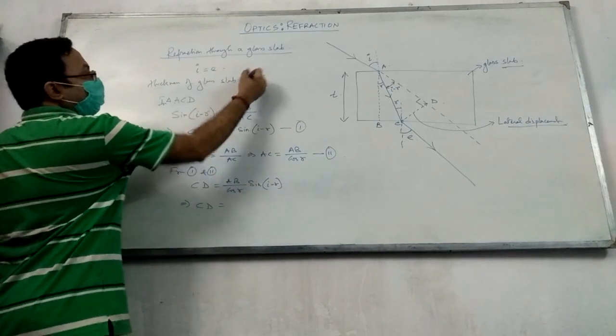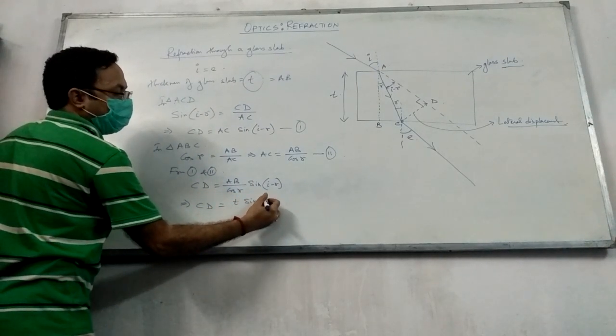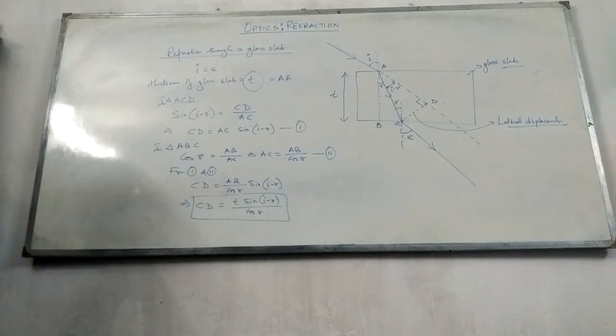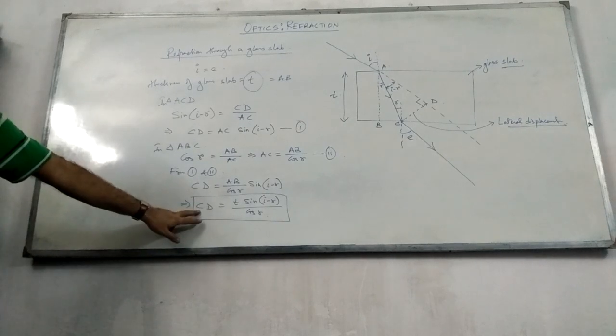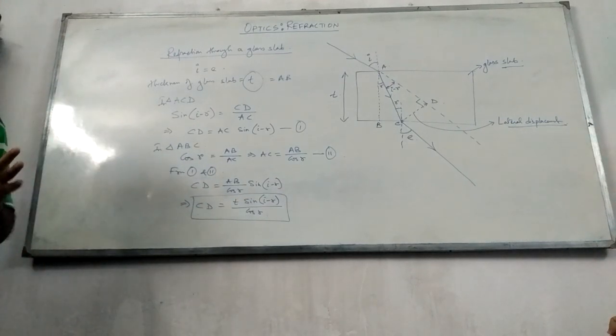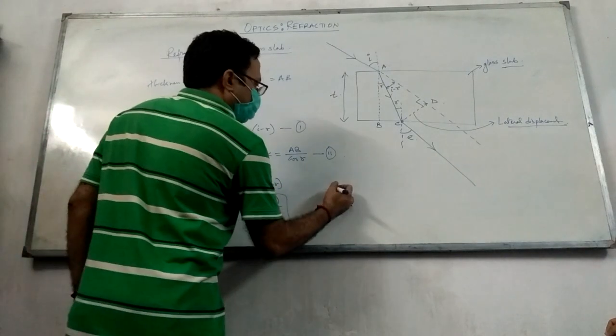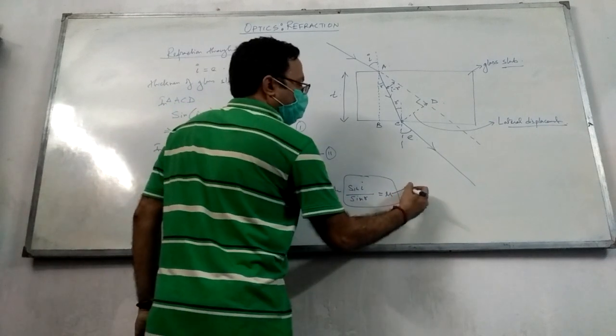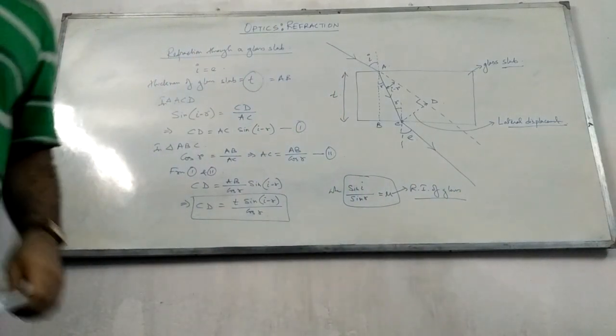So CD equal to AB, the lateral displacement. What is BC? What is our thickness? So T into sin of i minus r by cos r. Right? CD equal to lateral displacement. So lateral displacement depends upon the thickness of the glass, i and r. Depends upon i and r, but we generally say that it depends upon thickness and angles, where sin i by sin r is equal to mu, refractive index of glass.